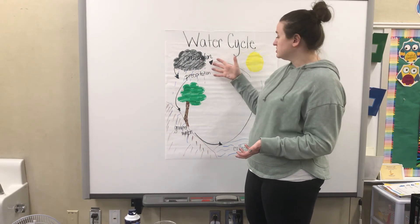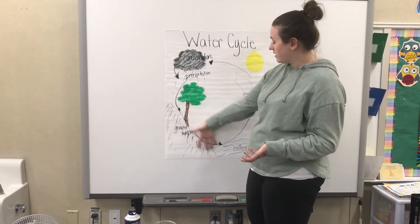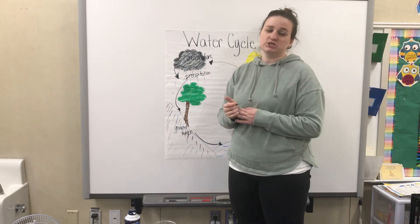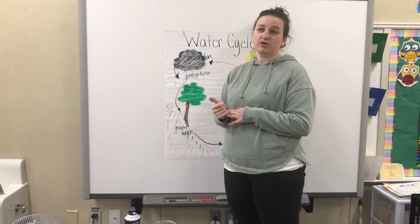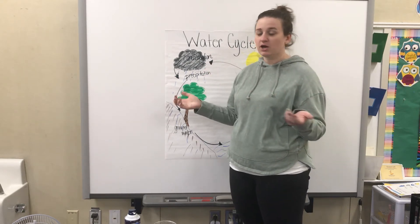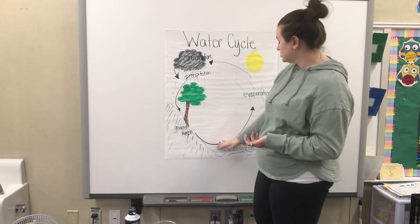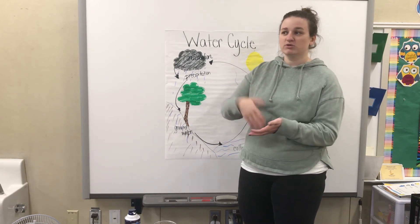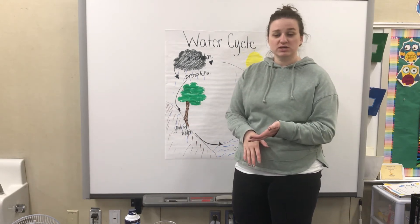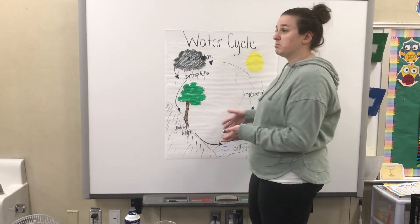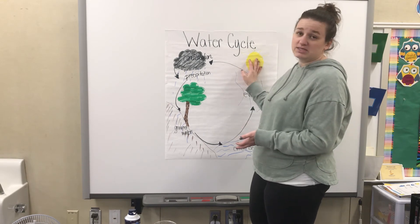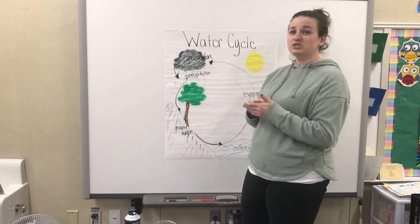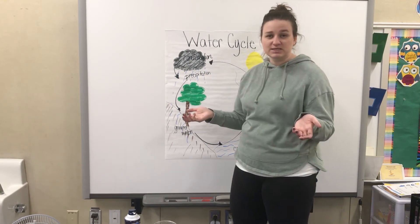The precipitation doesn't just have to be rain — it can be snow. If snow sits on the ground for a while, eventually some of it goes into the ground once it melts, and some of it could be evaporated up by the sun and back into clouds. It just depends on the season of the year.